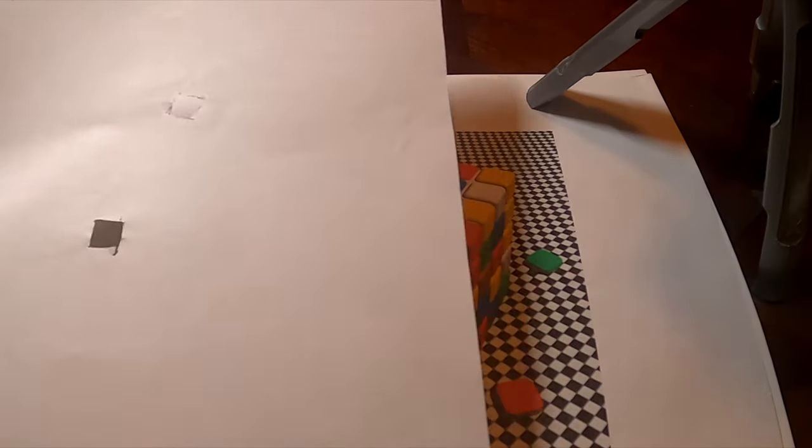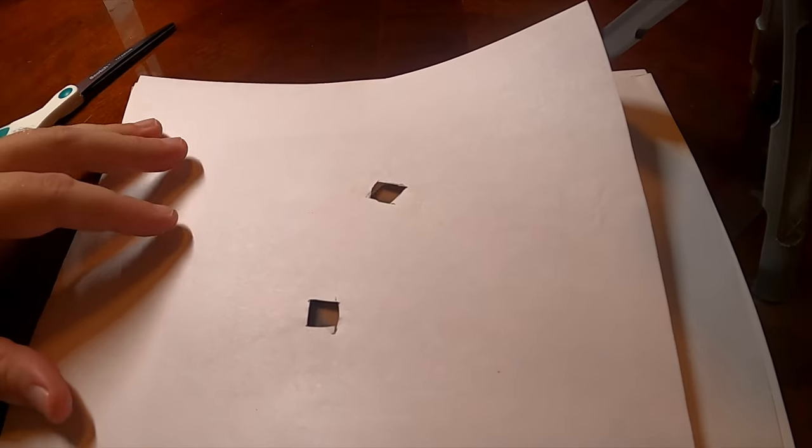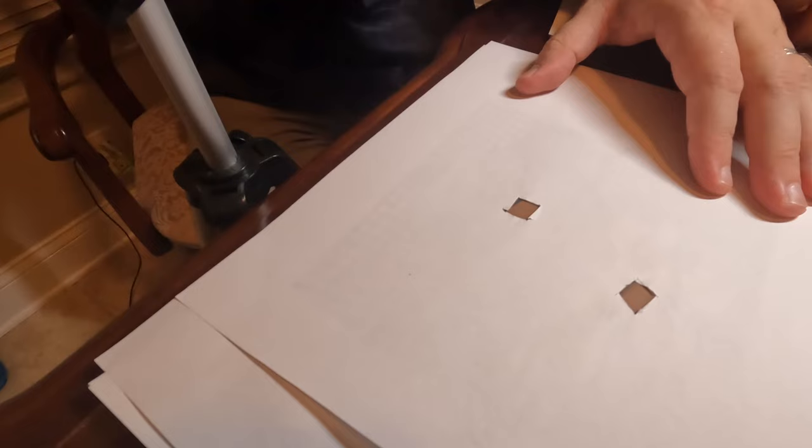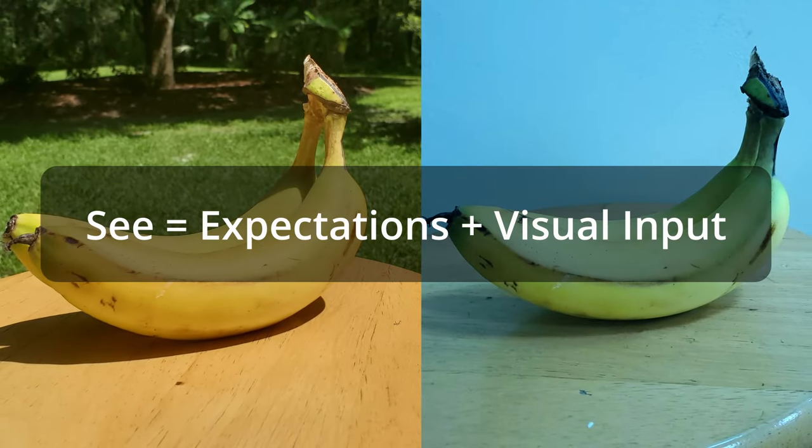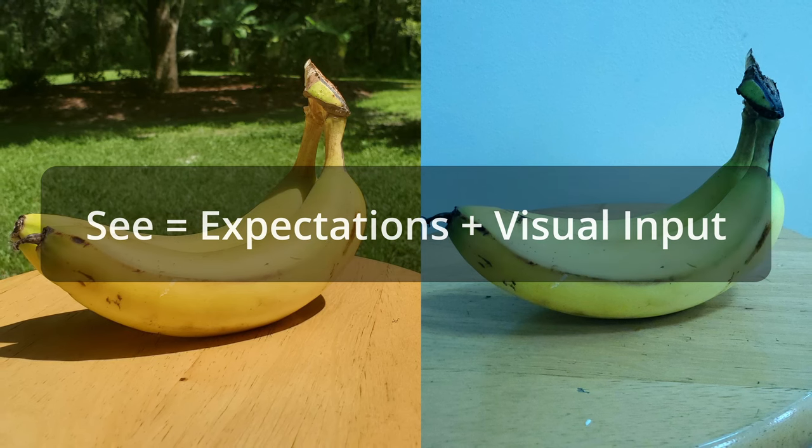It's the same explanation for the pseudo-Rubricks cube. It's also the same explanation for the Great Banana Nebula. Your brain expects yellow and it sees the banana as yellow even if the color of the light hitting it is different. It's the same explanation for the dress. People have different expectations about what the lighting is and it affects their perception.